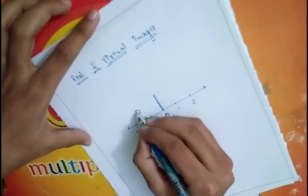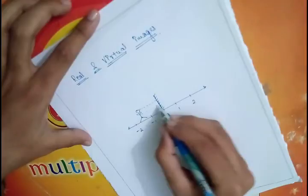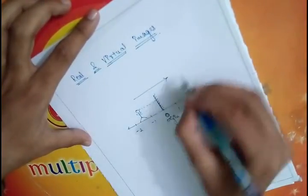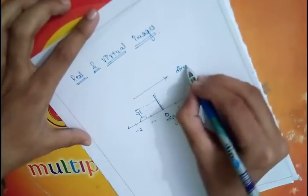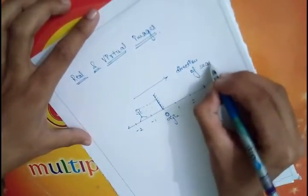The ray of light is coming like this. So the direction of ray of light is like this.